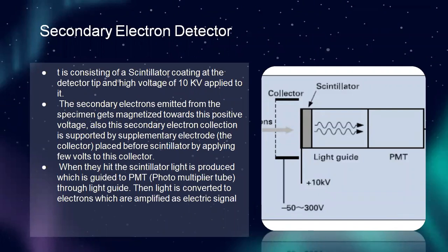Next, I will discuss the secondary electron detector. It consists of a scintillator coating at the detector tip with a high voltage of 10 kV applied to it. The secondary electrons emitted from the specimen are attracted towards a positive voltage. This secondary electron collection is supported by a supplementary electrode — a collector placed before the scintillator — by applying a few volts to this collector. When they hit the scintillator, light is produced which is guided to a PMT (photomultiplier tube) through a light guide. The light is then converted to electrons which are amplified as an electric signal.